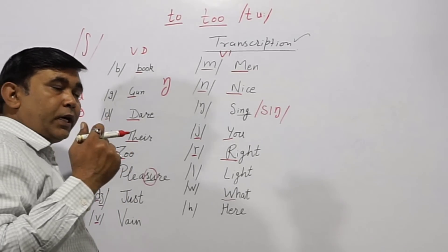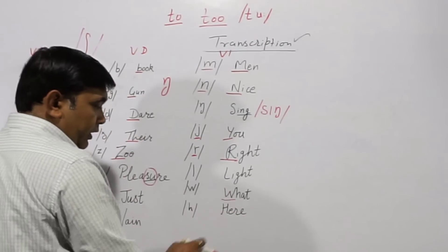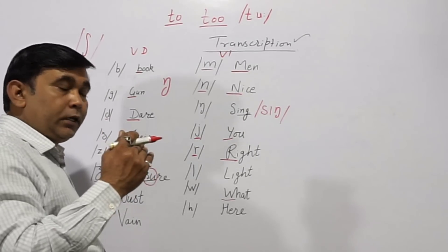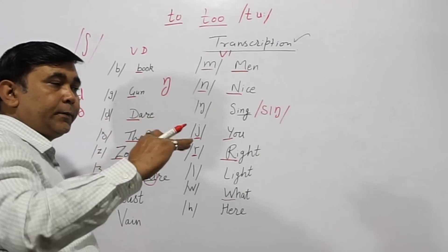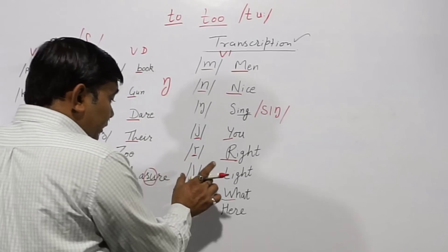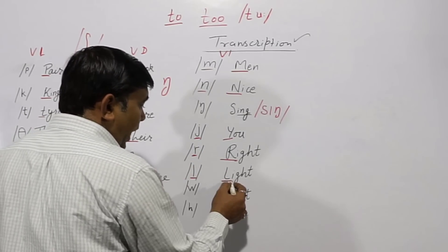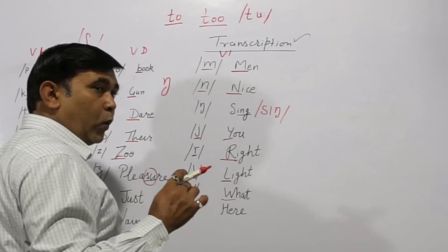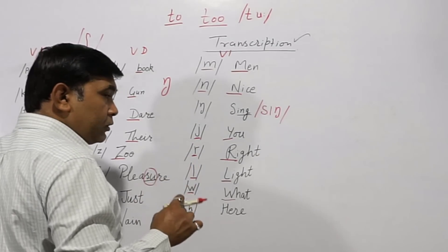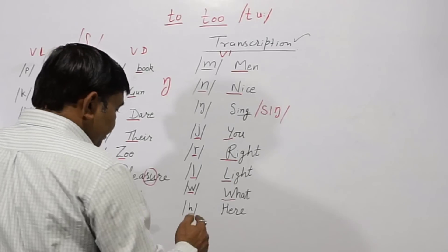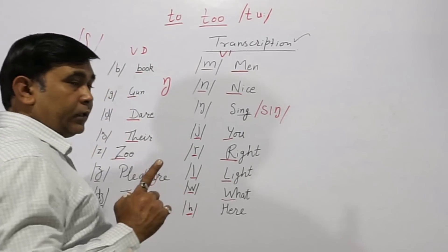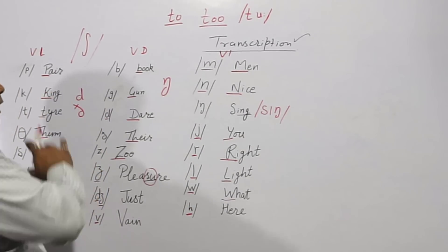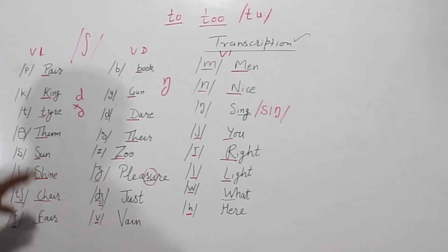For example, if we want to say 'here' — H-E-R-E — it is 'here', not 'heer'. Similarly 'there', or 'sir'. Next is /l/ — small l type symbol — as in 'light'. Then /w/ — small w type symbol — as in 'what', 'which', 'when', 'where'. And lastly /h/ — as in 'here', 'how', 'her'. Those are our consonant sounds.